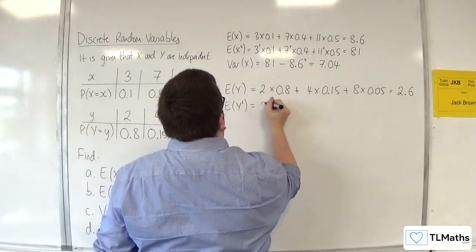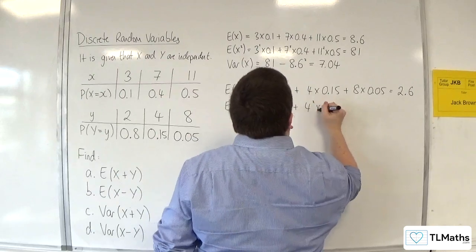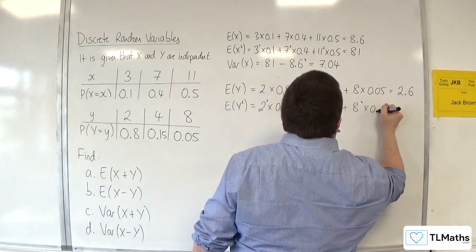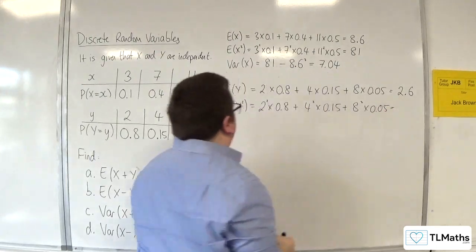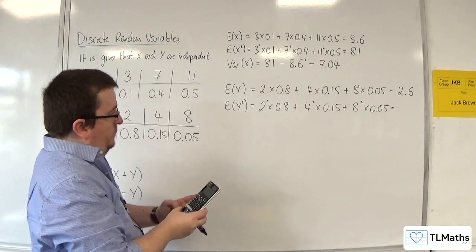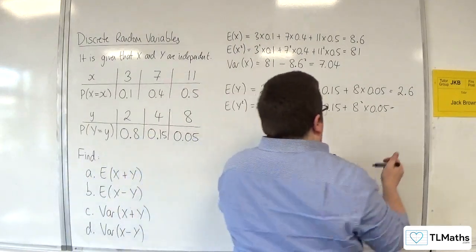E of Y squared is 2 squared times 0.8 plus 4 squared times 0.15 plus 8 squared times 0.05. And that's 8.8.